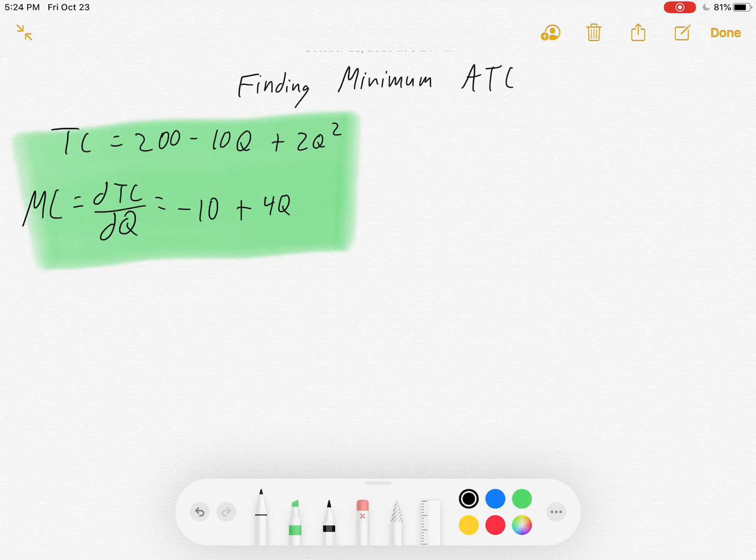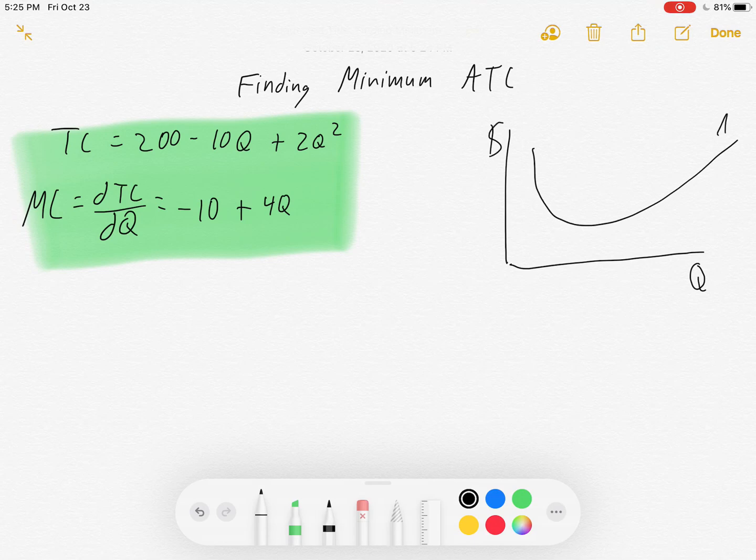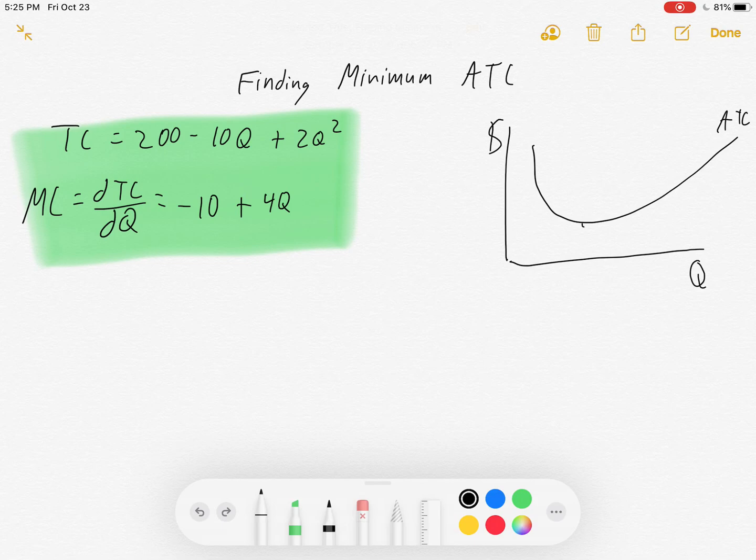But based on that, that information is given to us, let's remember what's going on. Our average total cost usually has some kind of a U shape, and it does in this case too. It's going to look something like this. We're trying to find this quantity and this dollar value to find the minimum average total cost.